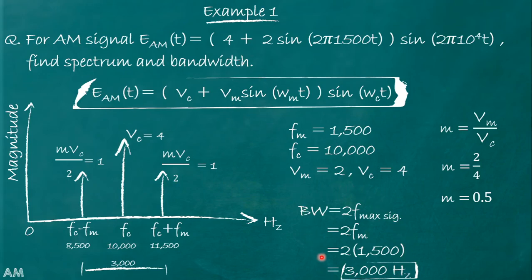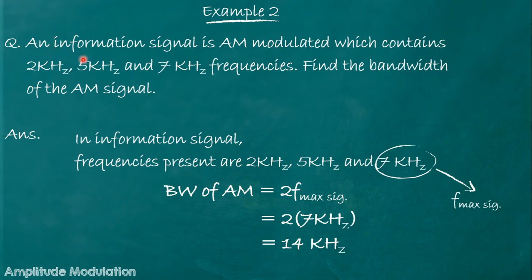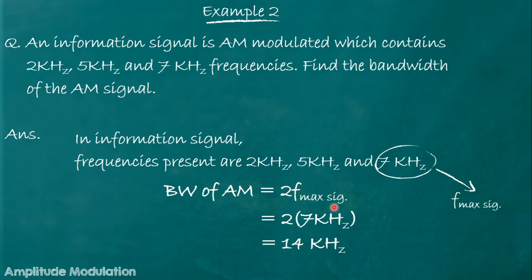Example 2: An information signal AM modulated contains frequencies 2 kHz, 5 kHz, and 7 kHz — find the bandwidth. From the formula, bandwidth of AM = 2 * f_max(signal). Out of 2, 5, and 7 kHz, the maximum is 7 kHz. Therefore, bandwidth = 2 * 7 kHz = 14 kHz.